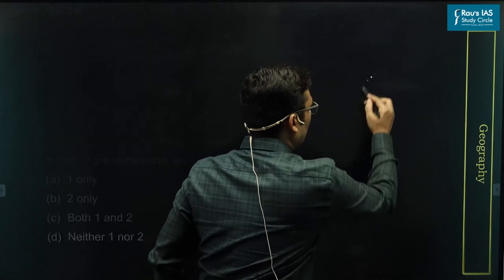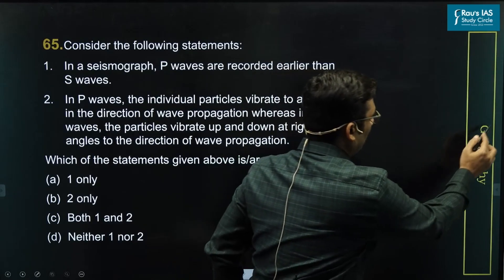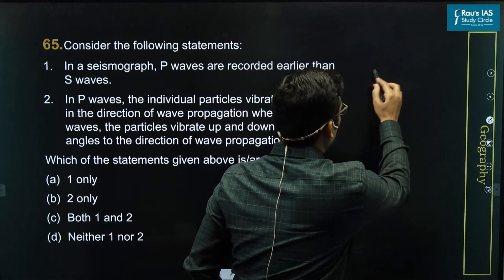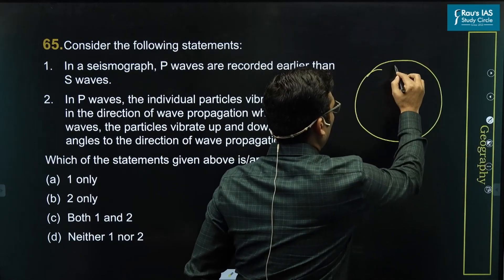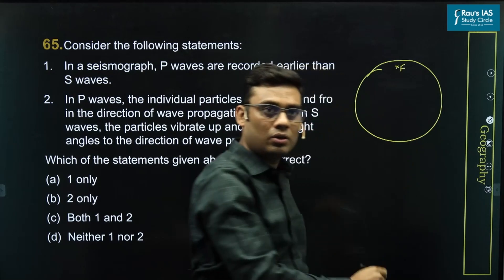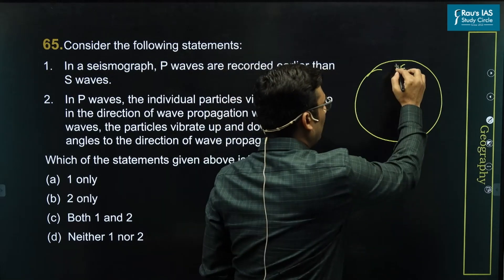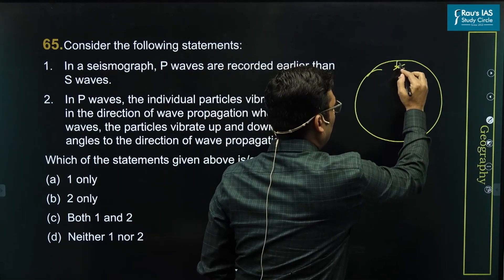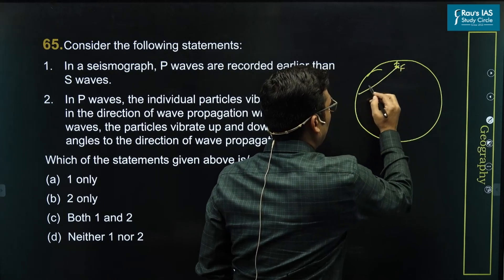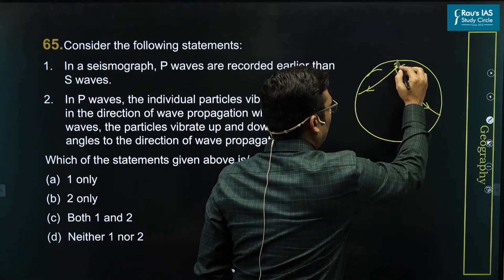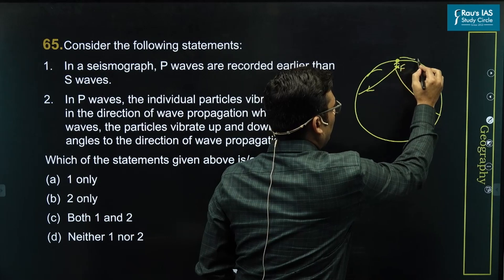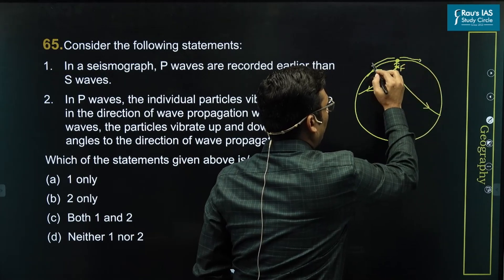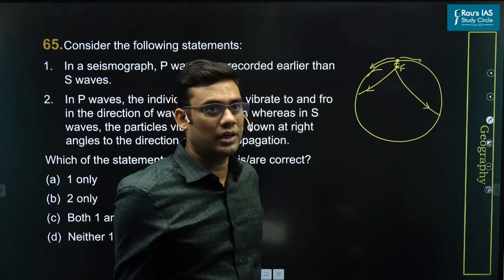Overall, if we see in the case of an earthquake, from the focus of the earthquake, the waves can emanate and travel something like this, and reaching on the surface from here a different set of waves arises which travels like this.